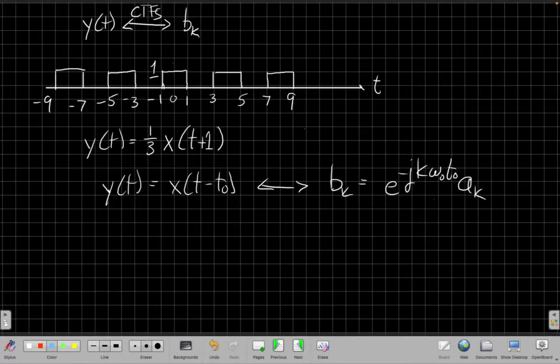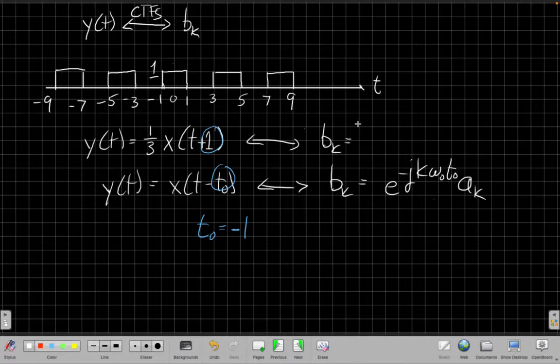So now comparing these two, looking at those two, I'm going to say, well, I need t0 to be equal to minus 1, so that when I have minus, minus t0, I get plus 1 up here. And what that's going to tell me, my b sub k for this example, well, I can't forget the scaling by a third. Scaling in time is still scaling in frequency.